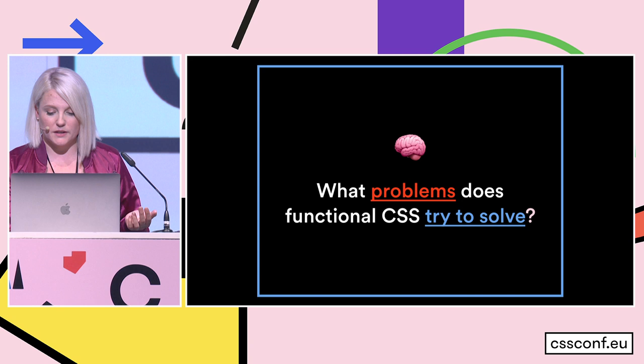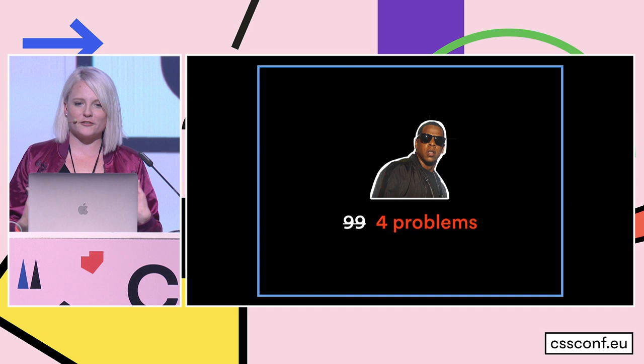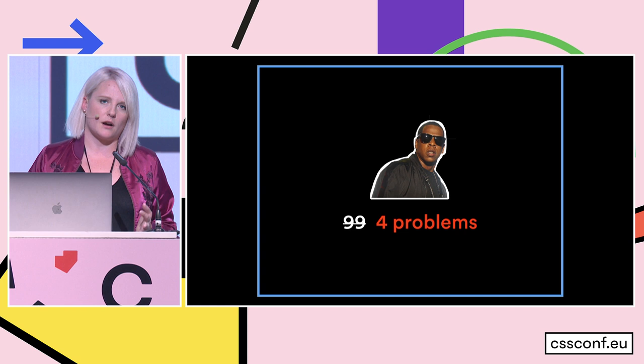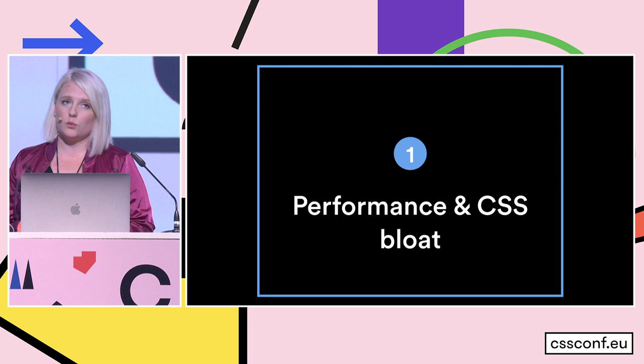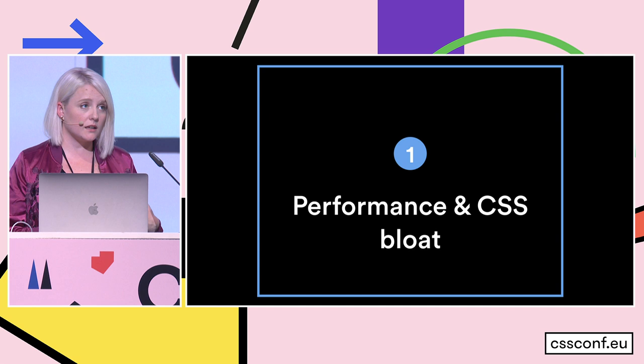So what problems does functional CSS try to solve? As Rachel mentioned this morning, CSS has lots of problems and we all have dealt with frustrations. I think there are four main problems that functional CSS tries to address. Probably the biggest is performance and CSS bloat. There's the actual performance aspect — when you cut down the amount of CSS you're writing, you're delivering a smaller bundle. But there's also dev time bloat, where you don't have to be writing the CSS. So on a selfish level, it's kind of nice to just know how these classes work, put them together, and not have to spend a lot of time writing CSS.